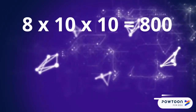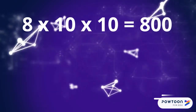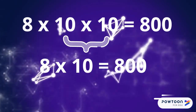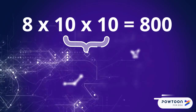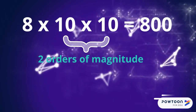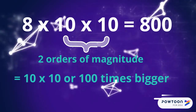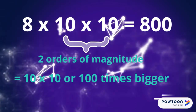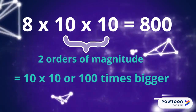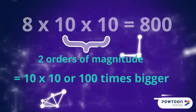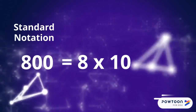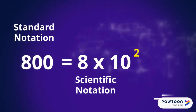8 times 10 times 10 is 800. We can replace the 10 times 10 with 10 to the power of 2. So the number 800 is 2 orders of magnitude larger than 8. Two orders of magnitude larger is 10 times 10, or 100 times bigger. So the number 800 in scientific notation is 8 times 10 to the 2.